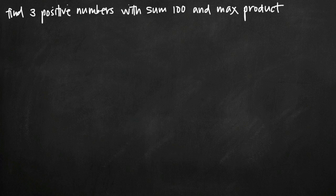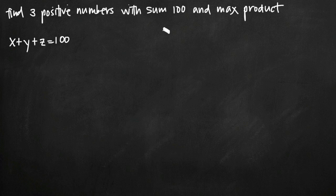Today we're going to be talking about how to find three positive numbers when those three positive numbers have a sum of 100 and when we're trying to find the maximum product of those three positive numbers. So in other words, what we're looking to do is find three positive numbers, which we'll call x, y, and z, who have a sum of 100, and we're looking for those three numbers to have the maximum product.